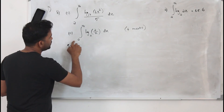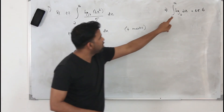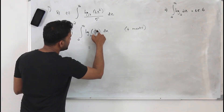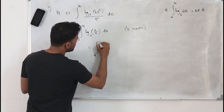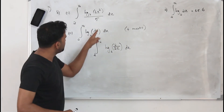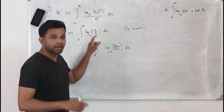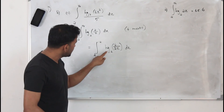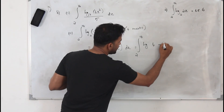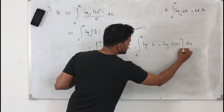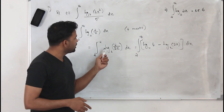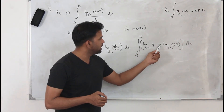For part b question 2, we have log₂(2/x), but we need log₂(2x) to substitute 45.6. What I'll do is multiply and divide the fraction by 2, so it becomes log₂(4/(2x)). Applying the law of logarithms — log(a/b) = log(a) − log(b) — this becomes ∫₂¹⁴ [log₂(4) − log₂(2x)] dx.